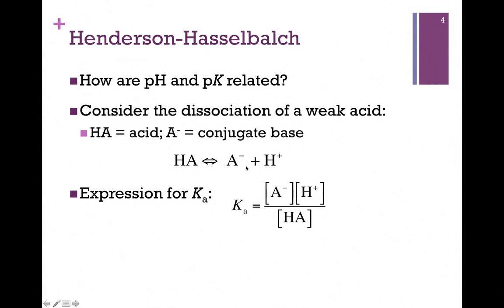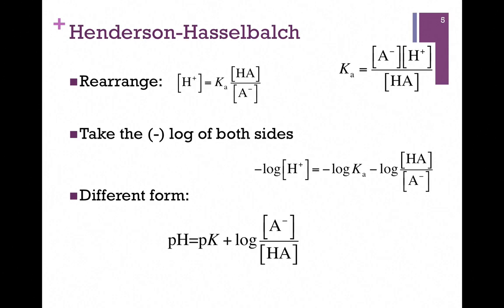Here's our simple expression. HA dissociates to form A- and H+. So our expression for Ka is products over reactants - the concentration of the ionized forms over the unionized forms. Here's our expression for Ka in the upper right.